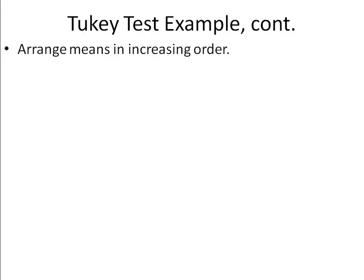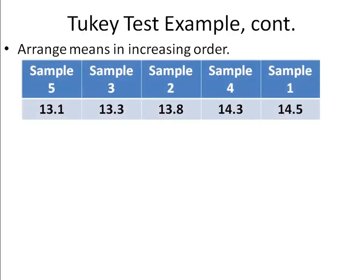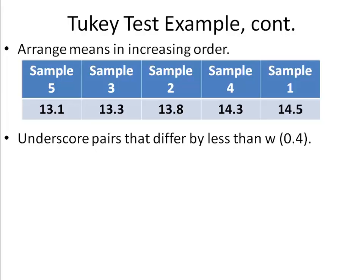So, the next step is we'll take our five means for our five different polymers, and we'll arrange them in increasing order. Now the order goes from the smallest to the largest from left to right. And we're going to underscore the pairs that differ by less than our value of W, which is 0.4. So, you can see that sample 1 and sample 4, they only differ by 0.2, which is smaller than 0.4, so we'll underline it.